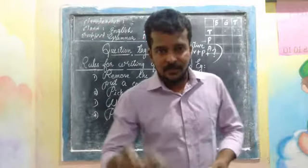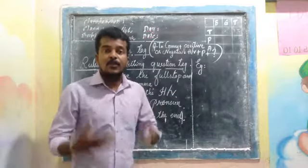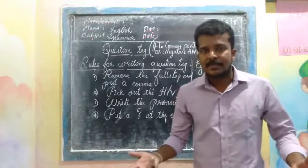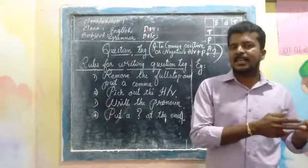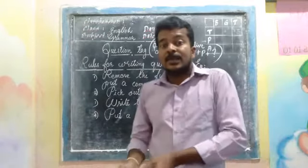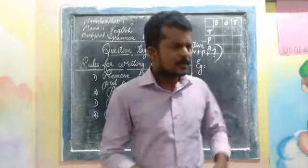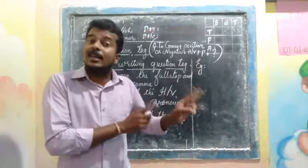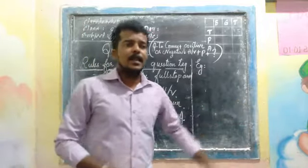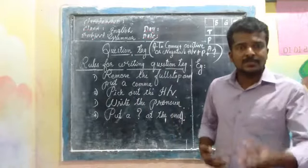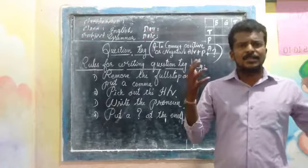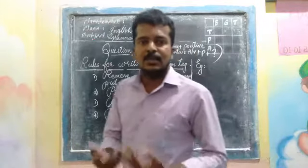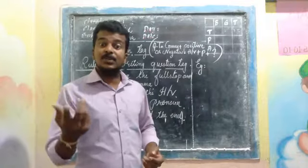For example: 'I was late yesterday, wasn't I?' — 'wasn't I' is the tag. By adding the tag, we are confirming whether I was late or not. Similarly, 'He is a good boy, isn't he?' — by asking 'isn't he' we confirm whether he is good or not. Other examples: 'She is coming tomorrow, isn't she?', 'She comes today, doesn't she?', 'I did my homework, didn't I?'